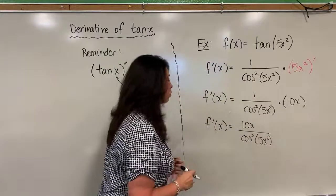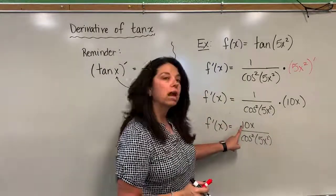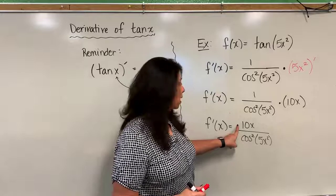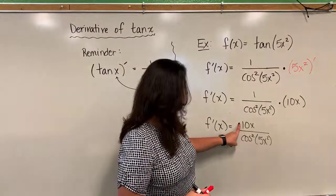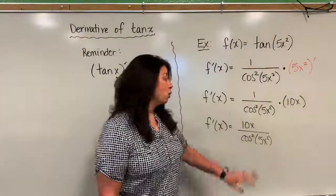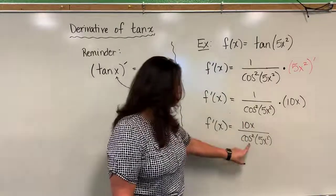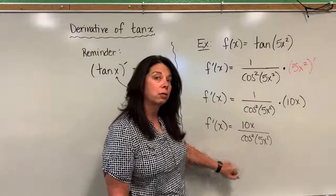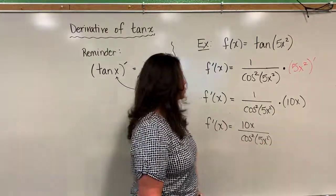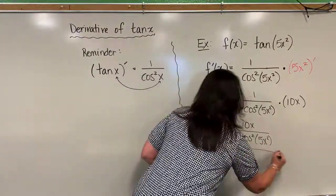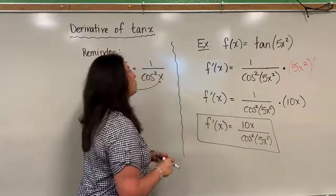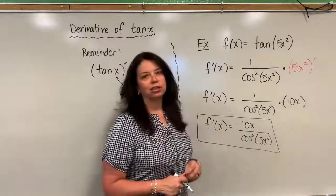And just in case you're wondering that maybe you could actually simplify by dividing out maybe part of the 10 or the 10X with the 5X squared, you cannot, because that 5X squared again is the argument into, in this case, the cosine squared function, so we must leave it just as is. This is my final answer for this derivative involving a tangent function.